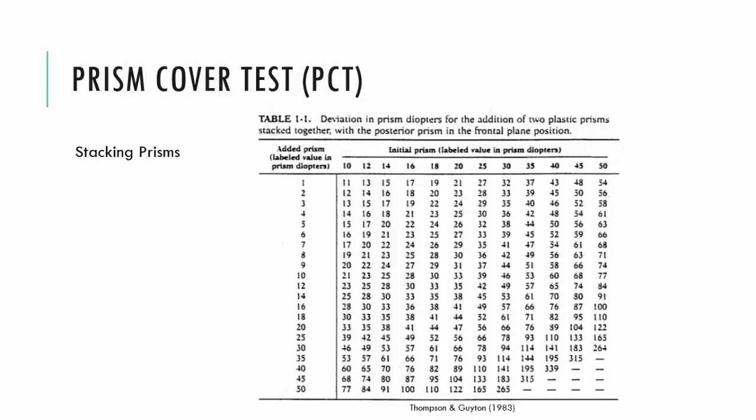So, we have to use tables that tell us what that stack of prisms equates to. And here is a table for stacking prisms. So, here we'll see that if we take a 30, and this is the column for the 30 here, and we take a 20 prism diopters, here is the intersection here. It equates to 66 prism diopters. So, we can see that obviously it's not 50, it's 66. So, always be mindful that if you're going to stack or split, you need to use your tables to be accurate in terms of documenting the size of the deviation.